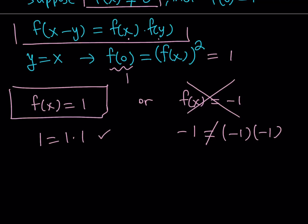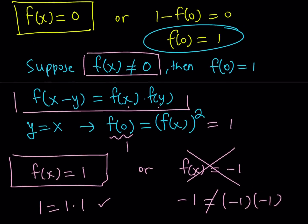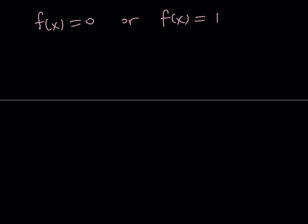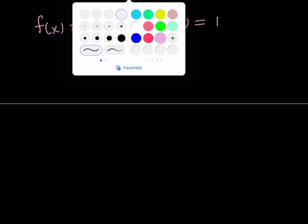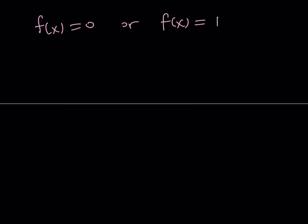These are going to be the only solutions so we basically have two solutions to this equation. Let's sum it up: either f of x is equal to 0 or f of x is equal to 1. So those are going to be the only solutions to this functional equation. Are there any other solutions?